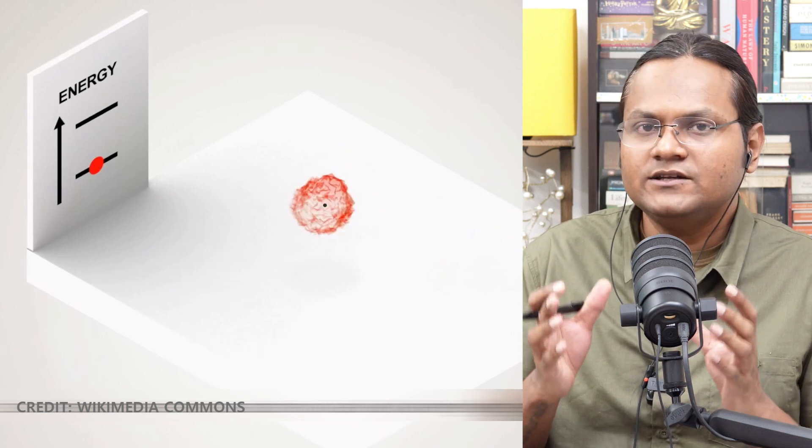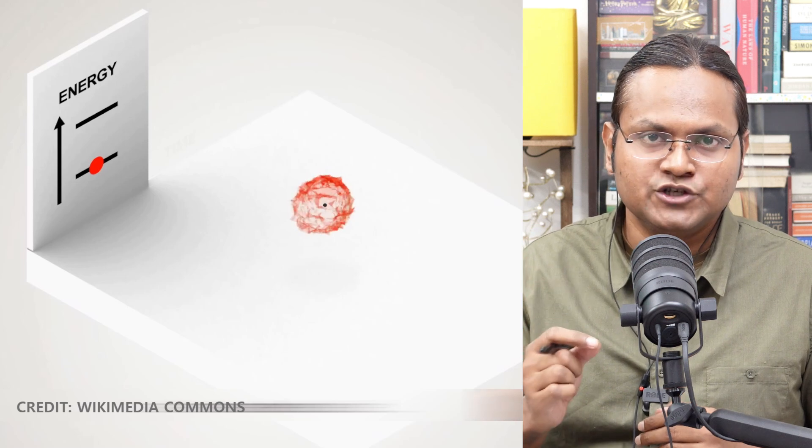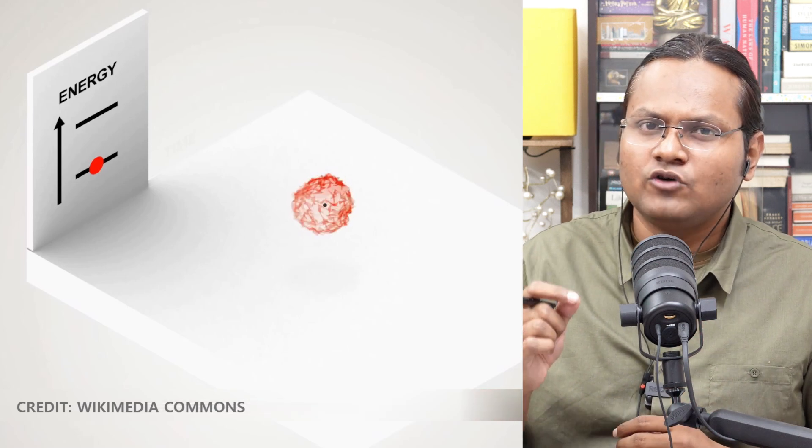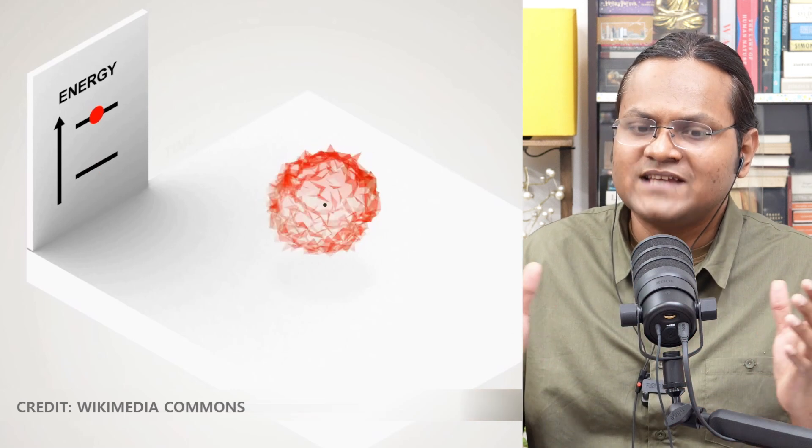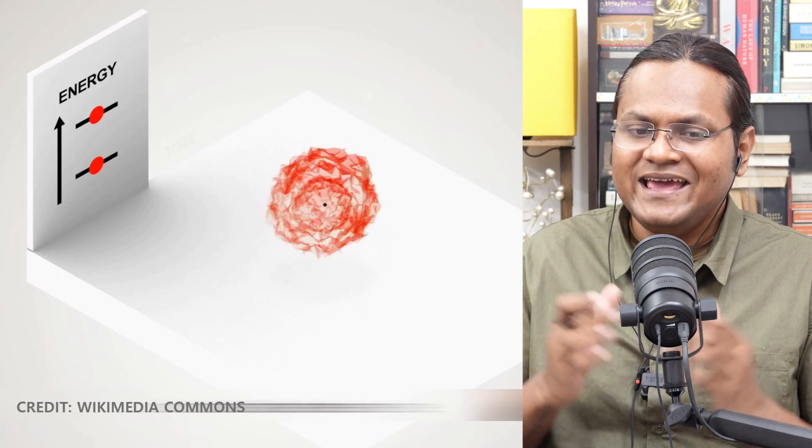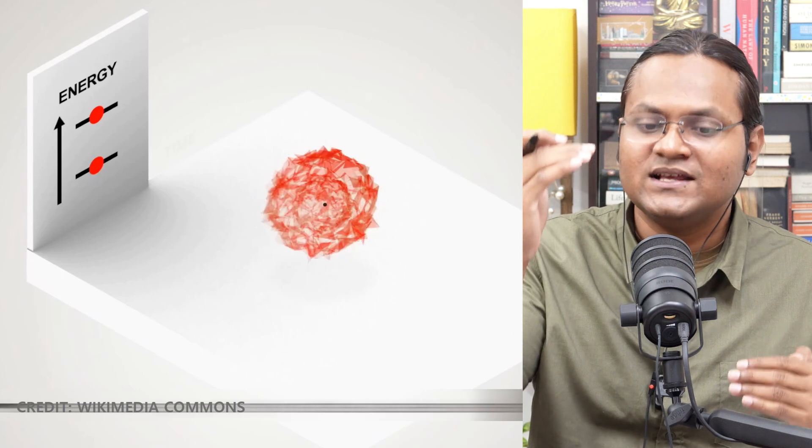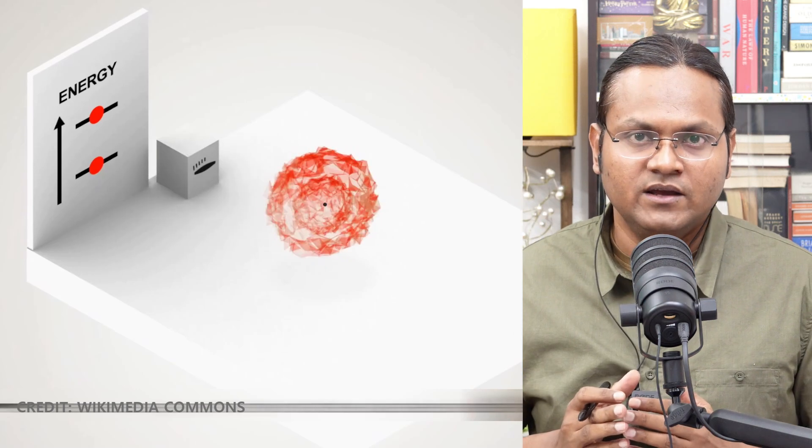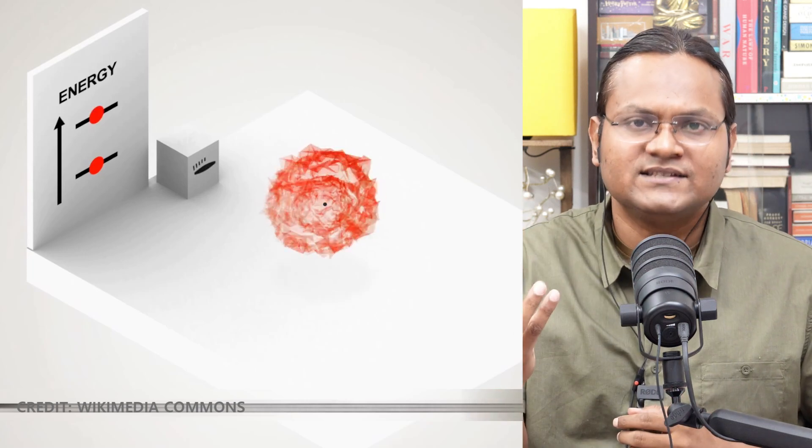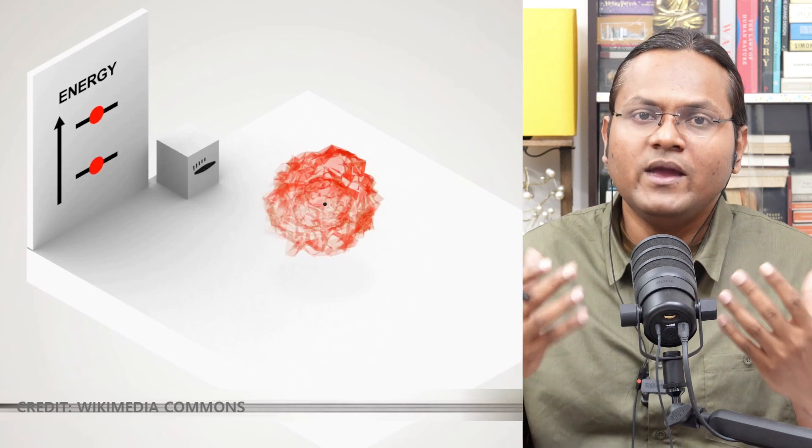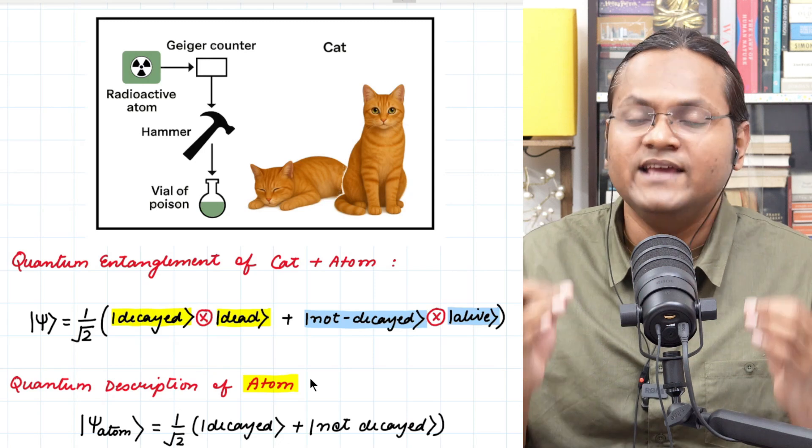So let's look at it like this. If the atom decays, then it decays to a ground state where the electron is in a lower energy level. And if it doesn't decay, then the electron is in a higher energy level. It is in an excited state. But the quantum description of this atom before we actually make a measurement is a quantum superposition of both these two states, the ground state as well as the excited state, unless an observation is made. Only when a measurement or an observation is performed, the atom is revealed to us whether it is in the ground state or in the excited state. But before an observation, the only way quantum mechanics can describe this atom is a quantum superposition of both the ground and the excited states.